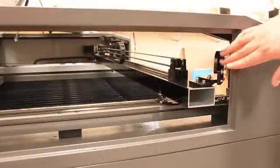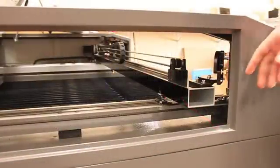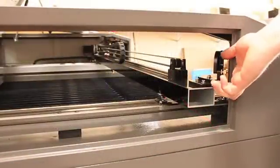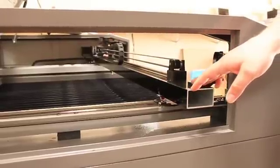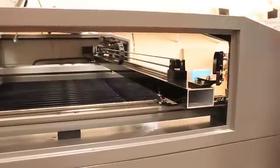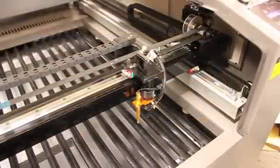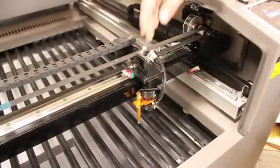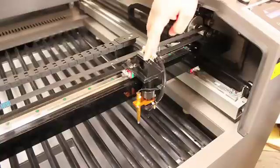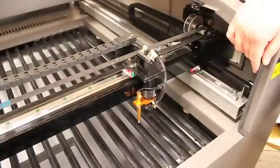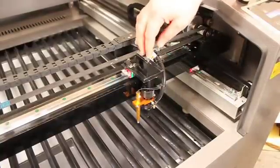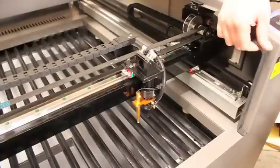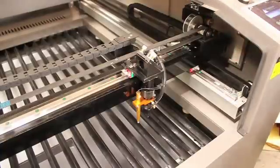After mirror one, we have mirror two optic. Mirror two has the thumb screws for adjusting the angle of the mirror, and then you have the slotted screws where you can translate the mirror for fine alignments. And finally we have mirror three. Mirror three directs the energy from the mirror down through the lens and onto the surface. Mirror three has fine adjustment screws so we can send the beam straight down through the center of the lens, which will be done in the last part of the process.